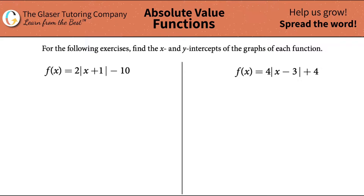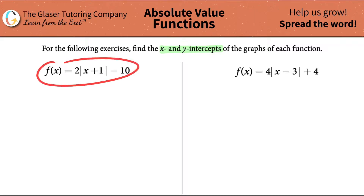For the following exercises, find the x and y intercepts of the graphs of each function. So let's start with the first one: f of x equals 2 times the absolute value of x plus 1 minus 10.